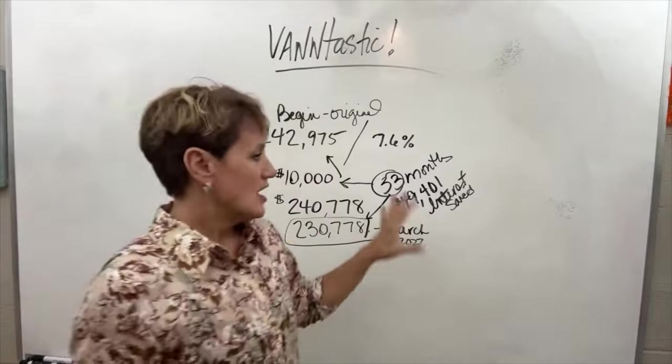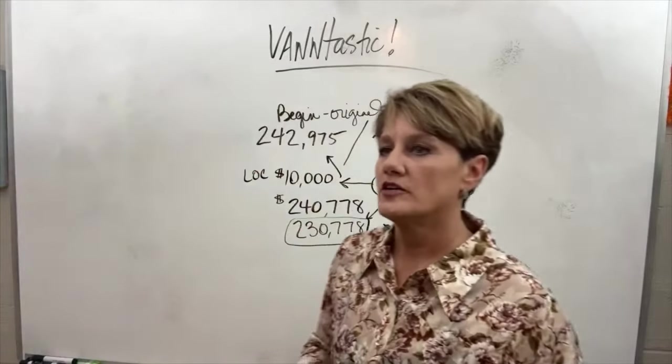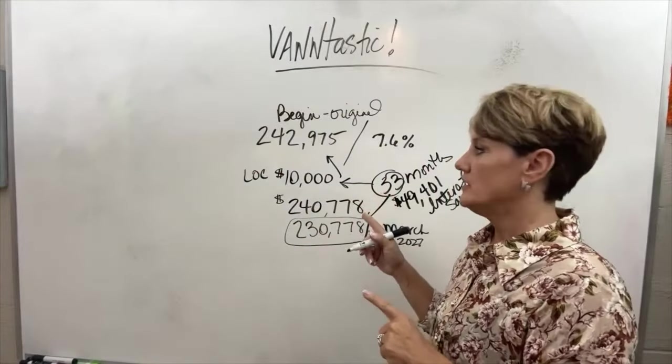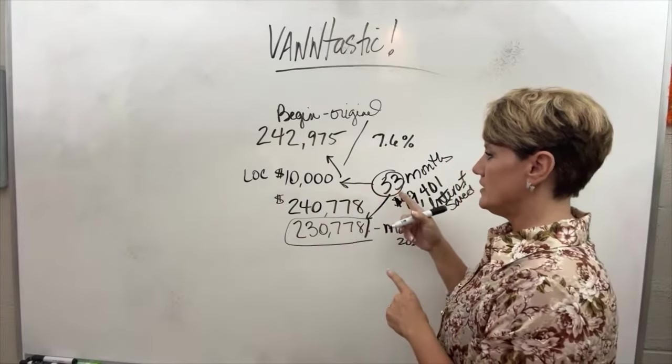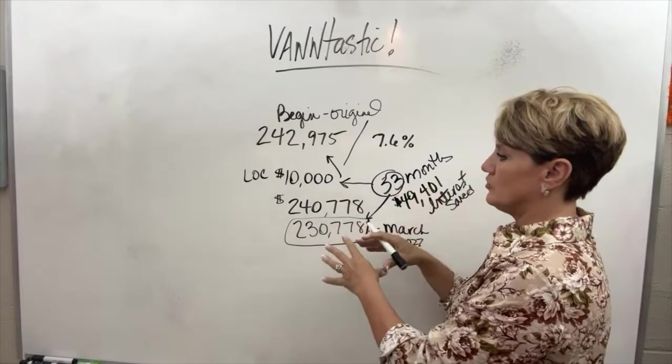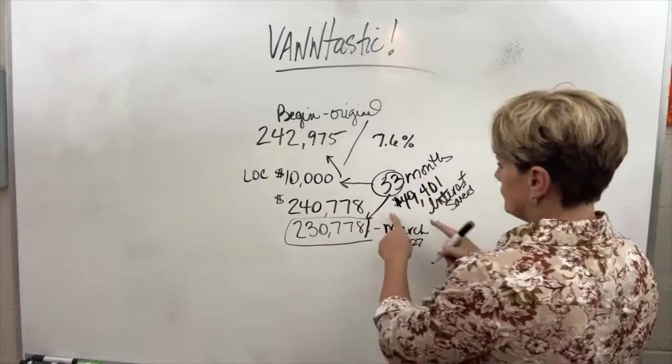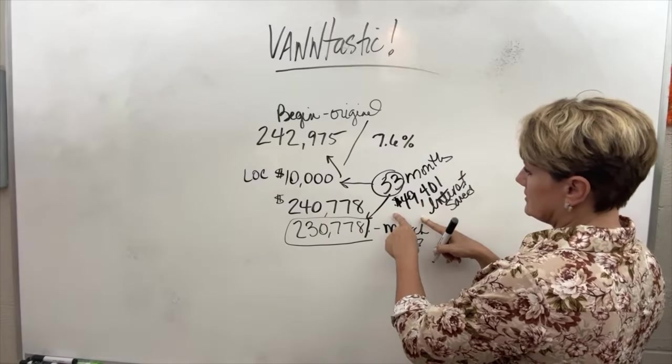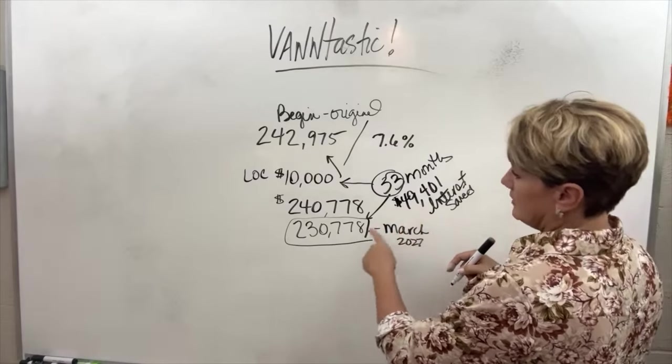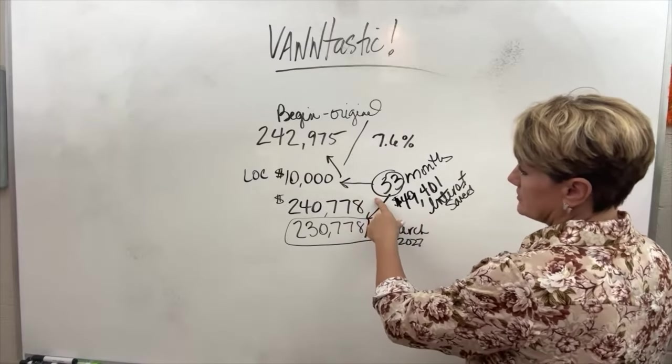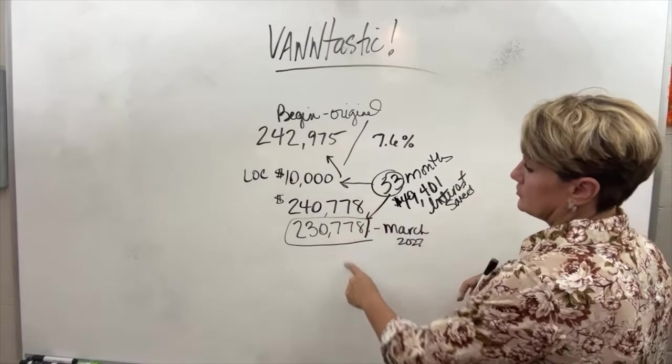So let's talk about, I'm not talking about the escrow. I am just talking about what he is actually doing with the money that he is putting into the mortgage, meaning principal and interest. So $49,401 is the interest that he will pay if he does the 33 months into this mortgage.